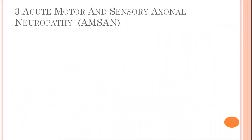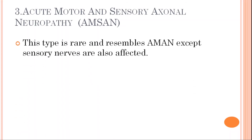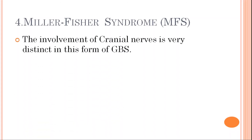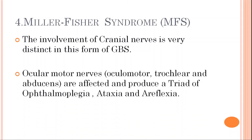The third type is acute motor and sensory axonal neuropathy. This type is rare and resembles AMAN, except that in this, both fibers are affected — sensory as well as motor — while in AMAN only the motor fibers are affected. This type is associated with severe cause and poor prognosis. The fourth one is Miller-Fisher syndrome.